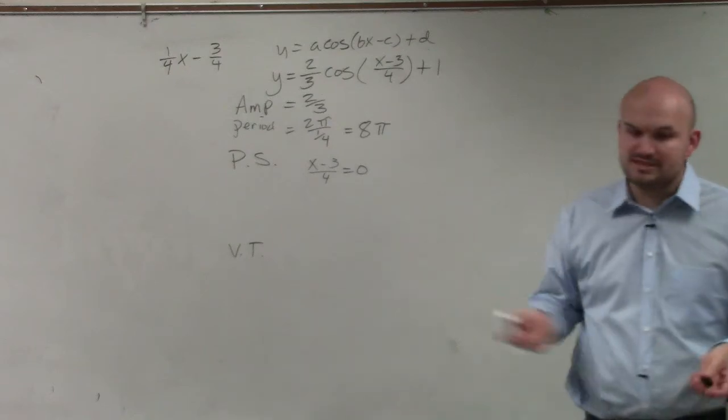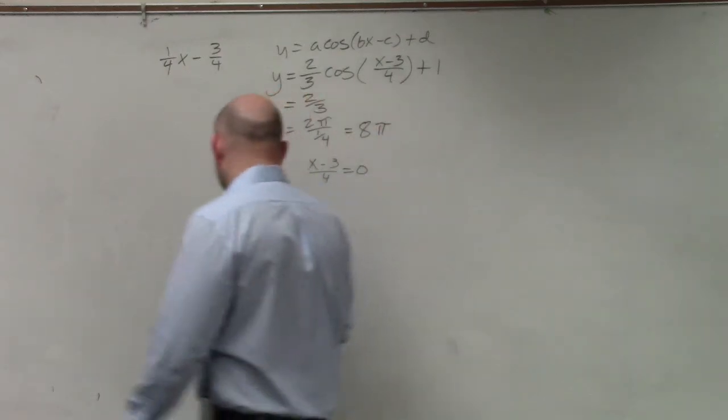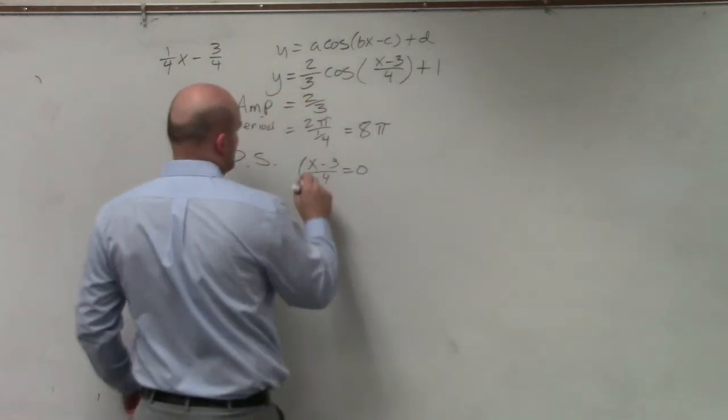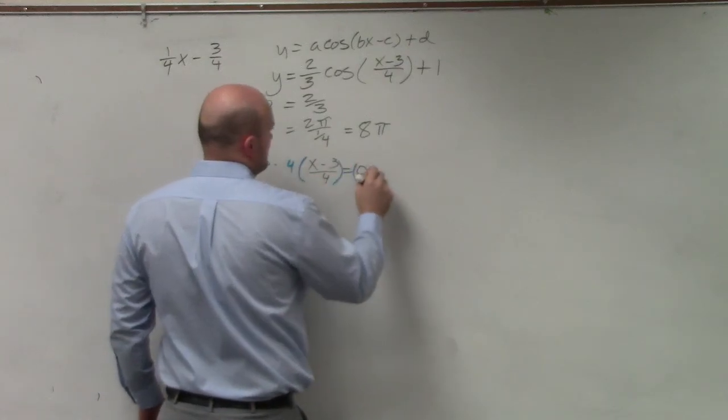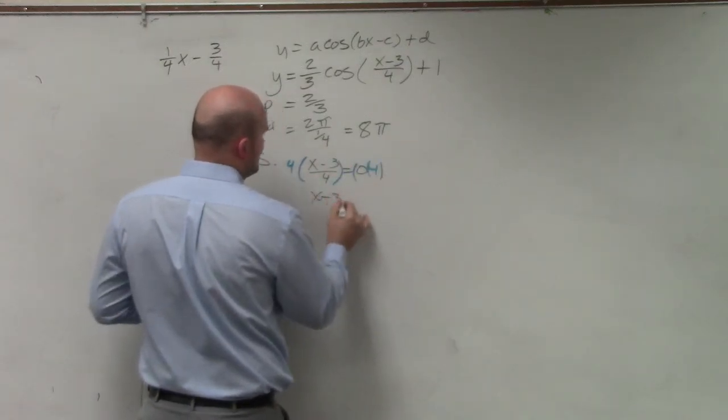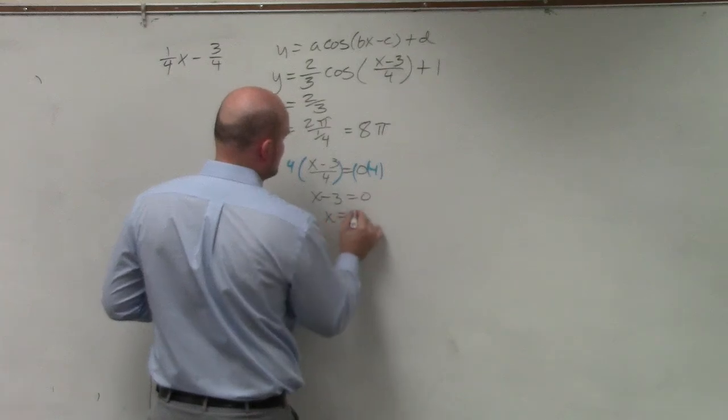So how do you get rid of the 4 in the denominator? You need to multiply by 4 on both sides. You get x minus 3 equals 0, x equals 3.